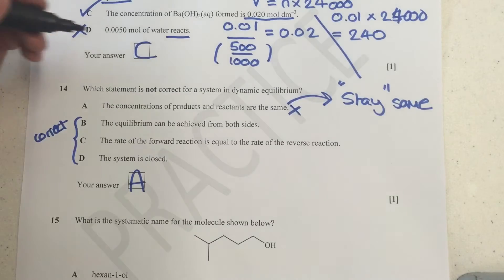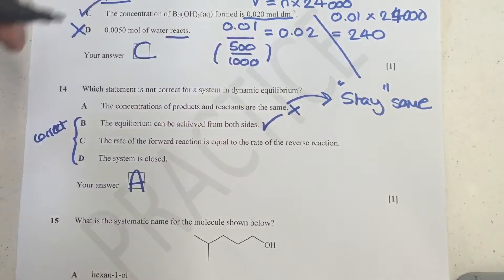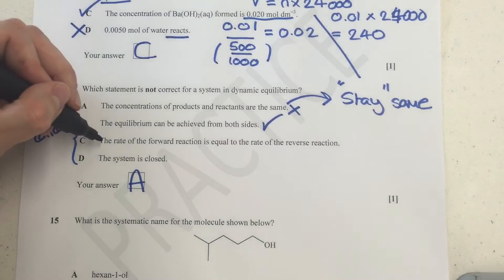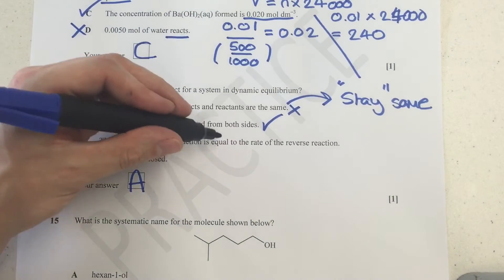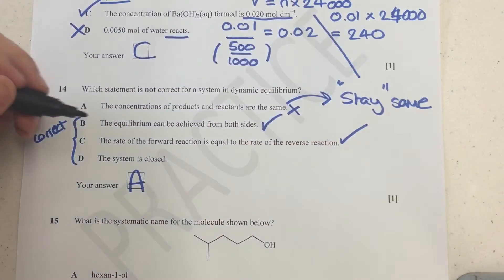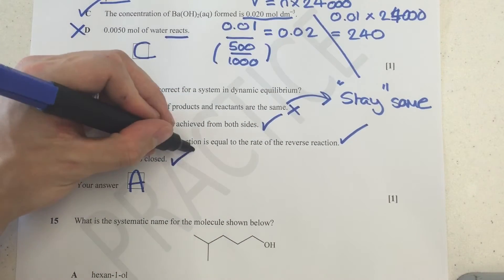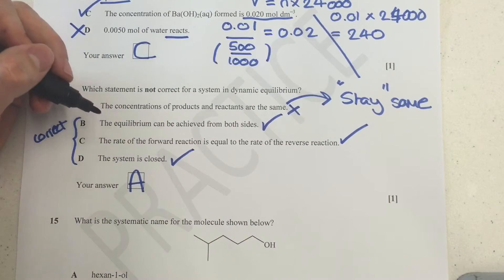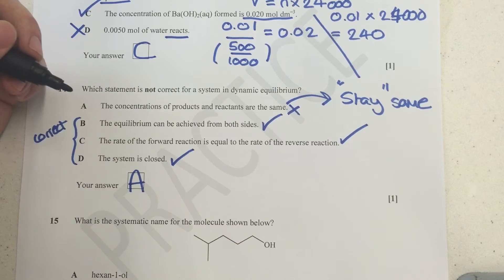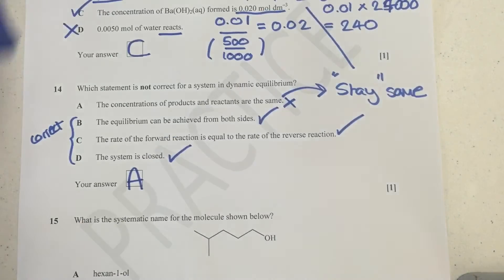But that means these are correct statements. And this will help us revise a bit. The equilibrium can be achieved from both sides. That means instead of just mixing all the reactants together and putting it under closed conditions, you can actually mix all the products together instead. And so that one's true. The rate of the forward reaction is equal to the rate of the backwards. Absolutely it is. And the system is closed. Yes, that means you can either put a lid on it and keep it nice and isolated, or you could dissolve everything in a suitable solvent and keep it at a constant temperature.